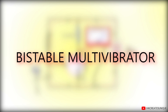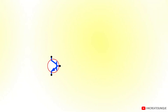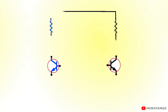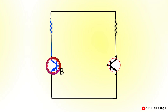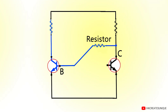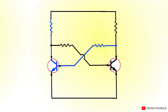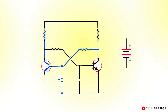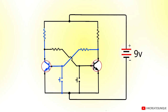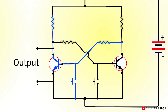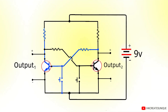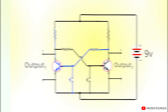The circuit consists of two NPN transistors with collector resistors. The base of the first transistor is connected to the collector of the second transistor in series with a resistor. Similarly, the fourth resistor is connected in the same way. Finally, connect a push button between base and emitter of each transistor, then power it up using a DC voltage source such as a 9 volt battery. The output can be taken from either or both transistors.